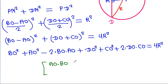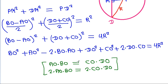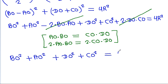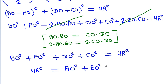Since AO times BO equals CO times DO, the terms 2·AO·BO and 2·CO·DO cancel out. So BO squared plus AO squared plus DO squared plus CO squared equals 4R squared, giving 4R squared equals AO squared plus BO squared plus CO squared plus DO squared.